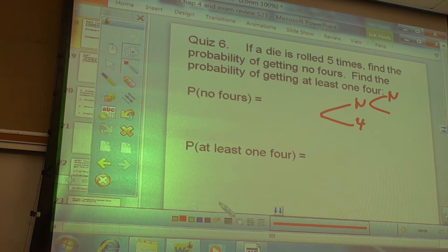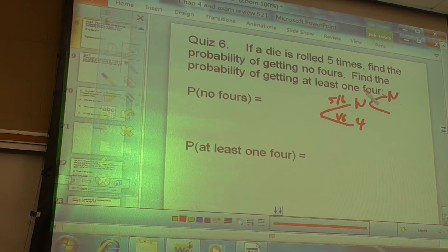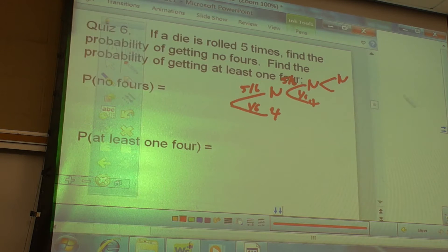Either I get a four or I don't get a four. What's the probability I get a four? One out of six. Probably I don't. It's four out of six. Okay. So, I need to get... How many no's? Five.